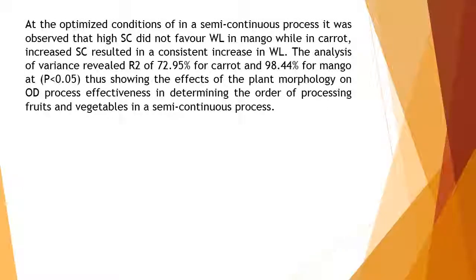At the optimized conditions in a semi-continuous process, it was observed that high sucrose concentration (SC) did not favor WL in Mango, while in Carrot increased SC resulted in a consistent increase in WL. The analysis of variance revealed R² of 72.95% for Carrot and 98.44% for Mango at P=0.05, thus showing the effects of plant morphology on OD process effectiveness in determining the order of processing fruits and vegetables in a semi-continuous process.